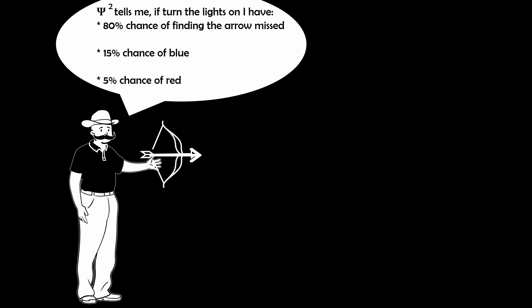Now let's say you turn the lights off and shoot the arrow. You might know the odds of hitting different sections, but until you turn the lights on, you don't know exactly where your arrow is. That's where the wave function comes in, offering a statistical view of where the arrow or electron might be.